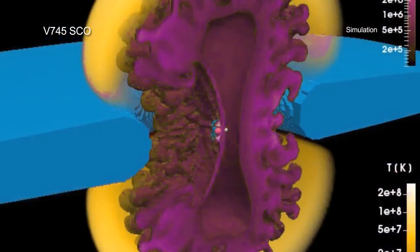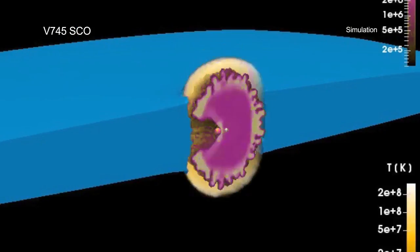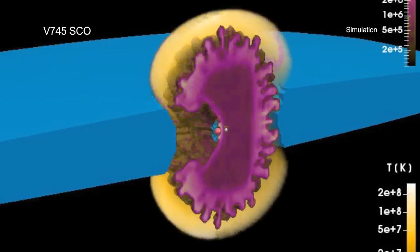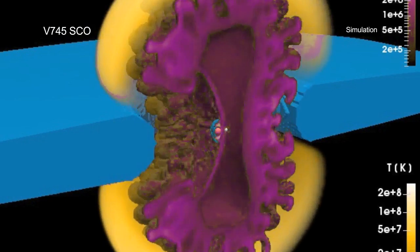The astronomers were also able to determine that V745-SCO is releasing a tremendous amount of energy during one of these outbursts, equivalent to about 10 million trillion hydrogen bombs.